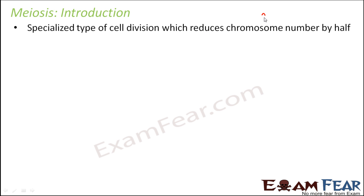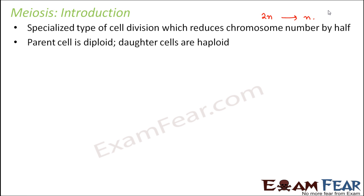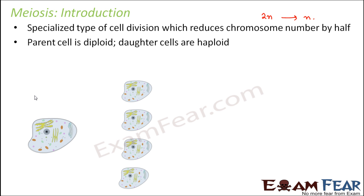So if before division the chromosome number was 2n, after division it becomes n. That means diploid cells can get converted into haploid cells. This is the main difference between mitosis and meiosis — in mitosis the chromosome number is conserved at 2n, but here it becomes half. The parent cell is diploid whereas the daughter cells are haploid. This is how male and female gametes are produced in animals. A diploid parent cell forms four daughter cells which are all haploid.